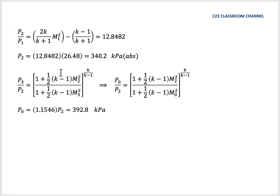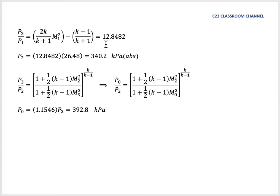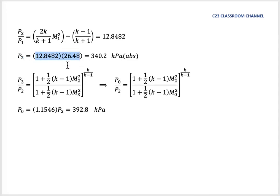To calculate the pressure after the shockwave, we use the normal shockwave equation. P2 over P1 from this equation can be calculated as 12.8482, which means that the pressure after the shockwave can be calculated as 340.2 kilopascal.